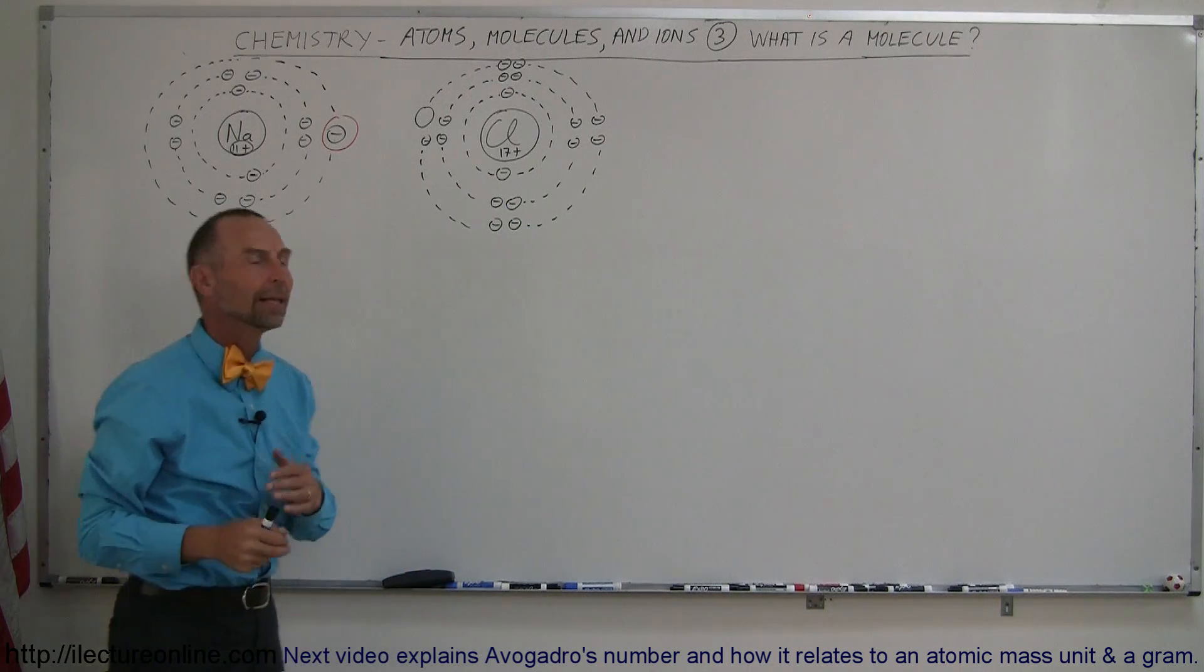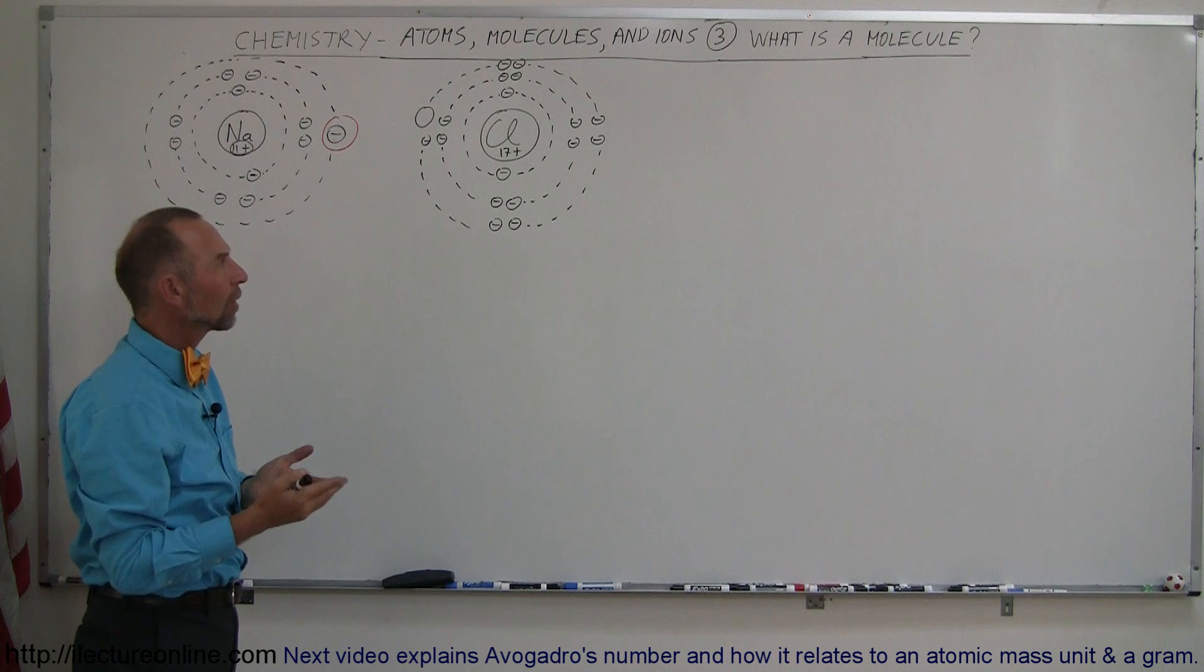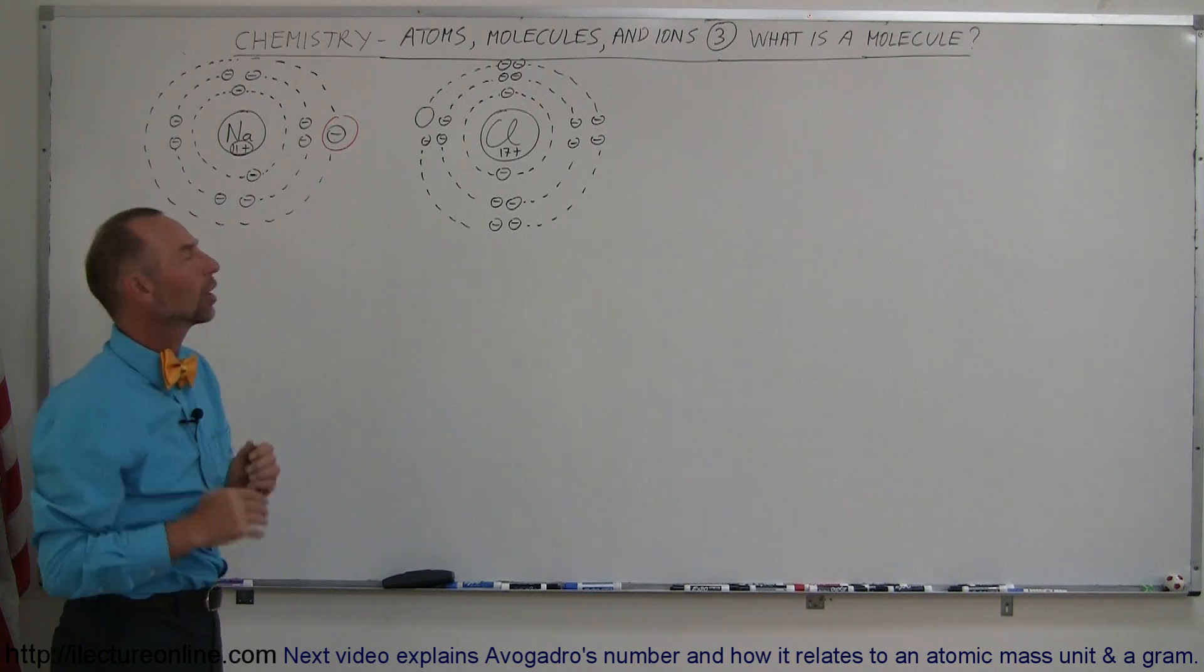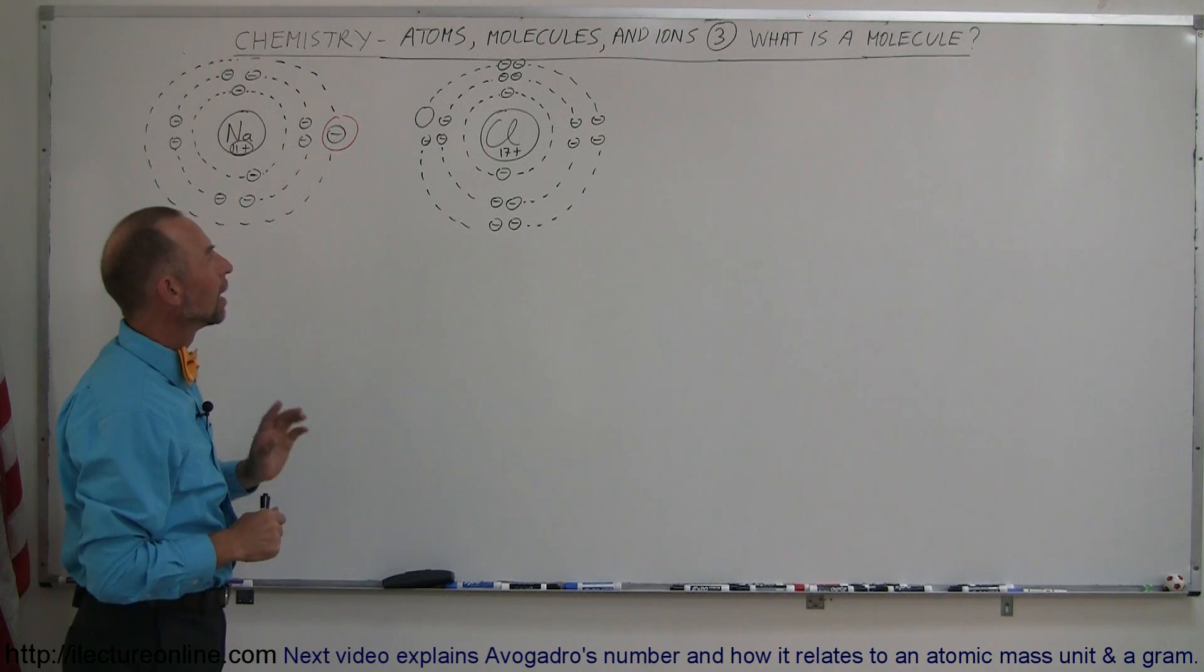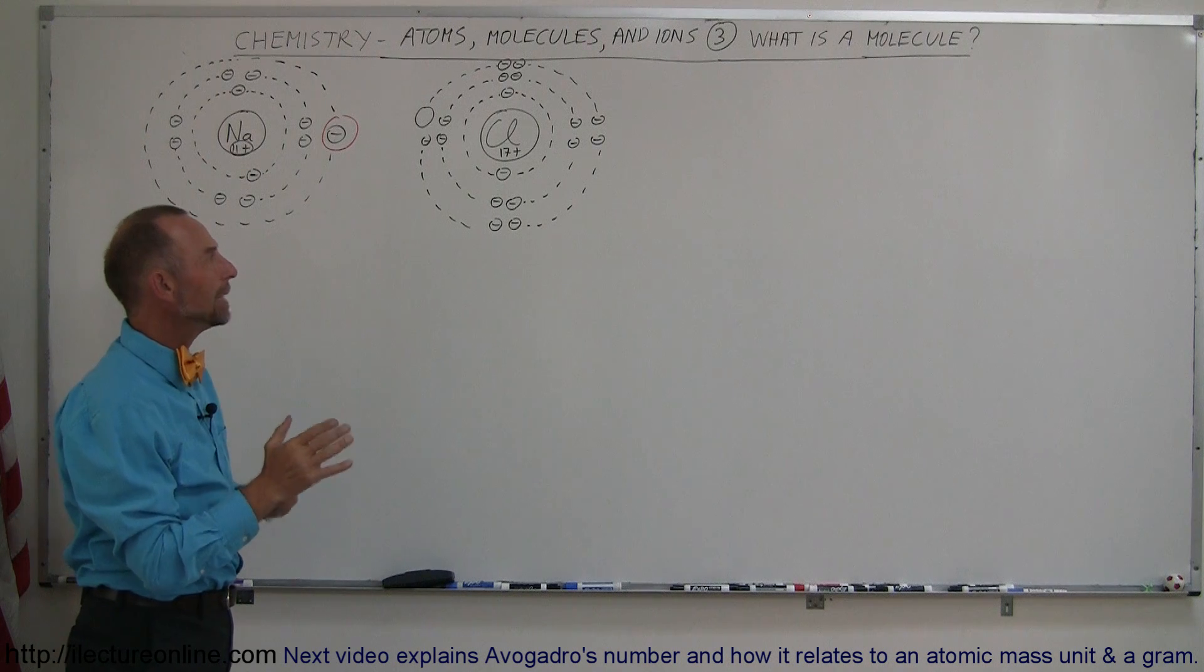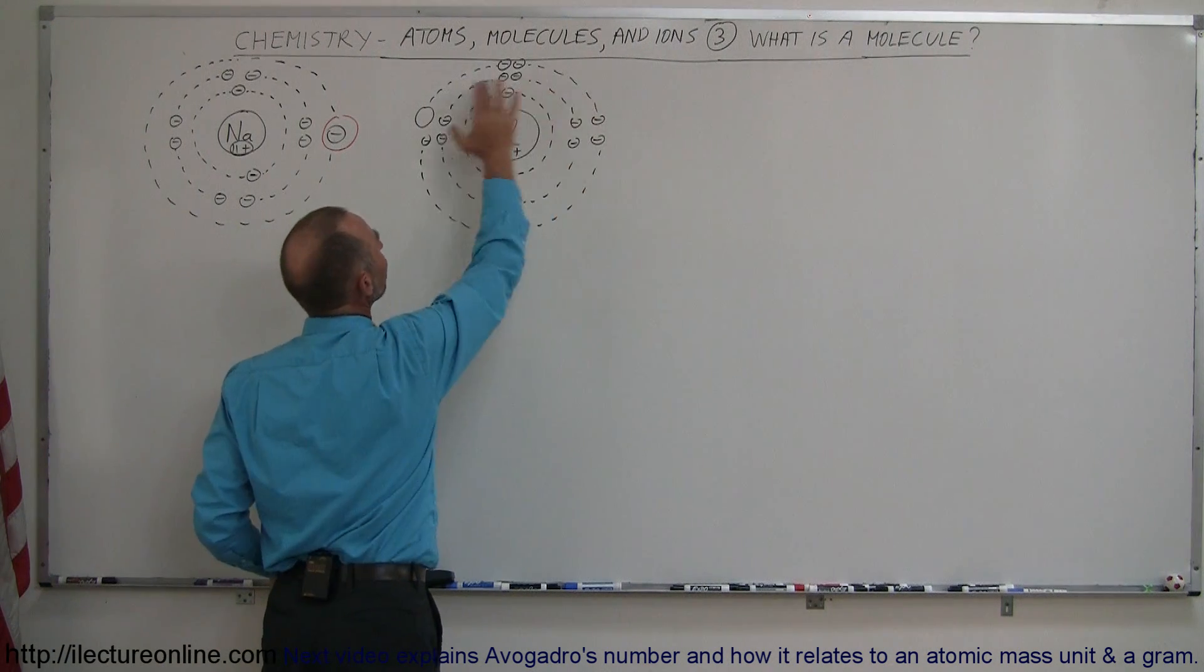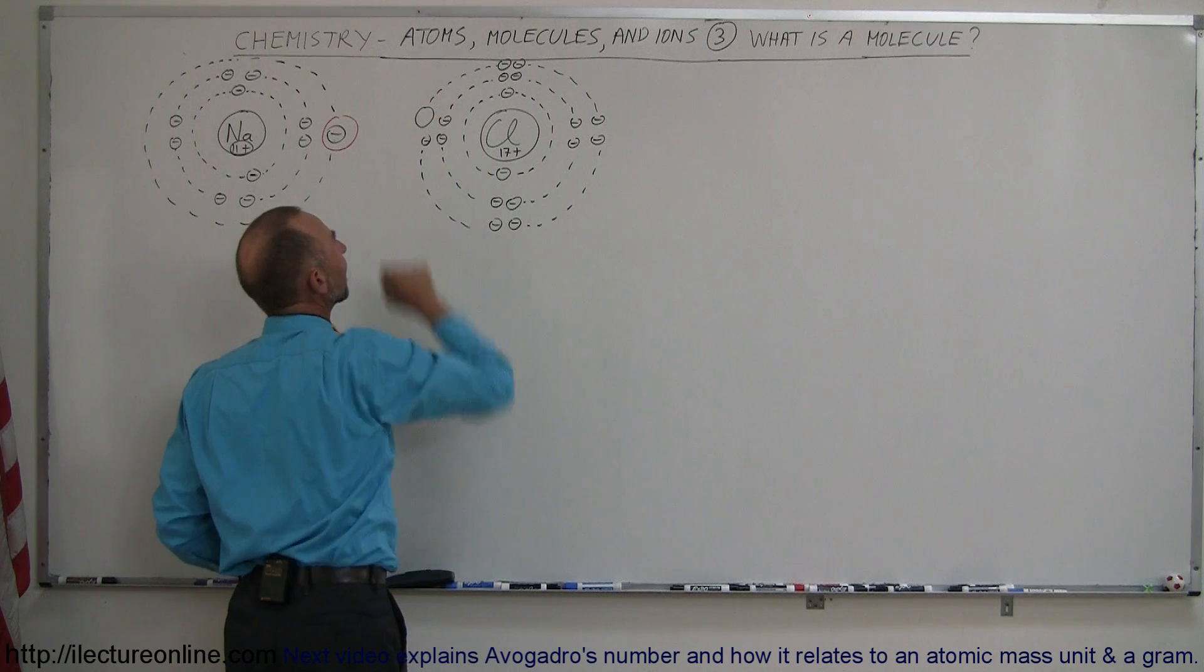Now there's more room than 8 electrons in the third energy level, but that's another video later on. But there's at least room in the s and the p orbitals for 8 electrons. And notice that there is one missing.